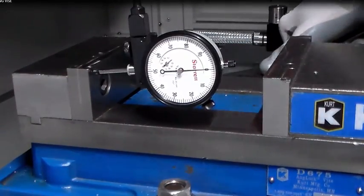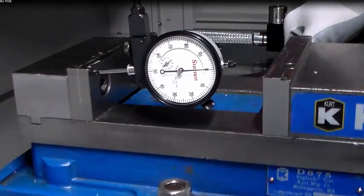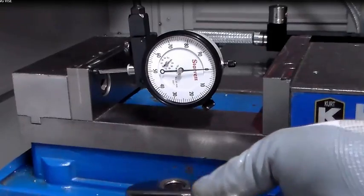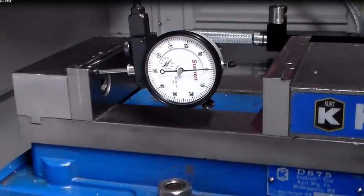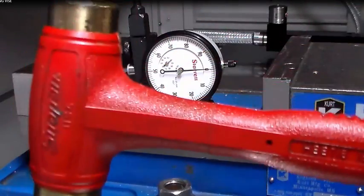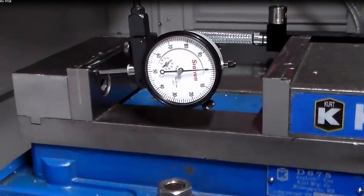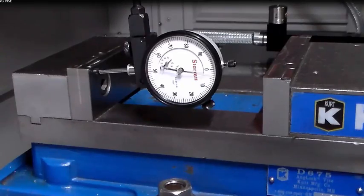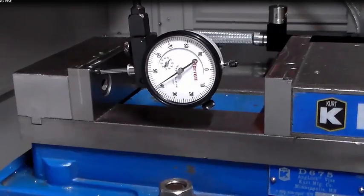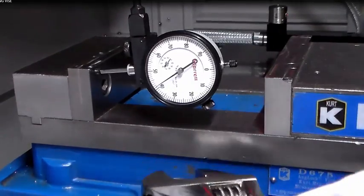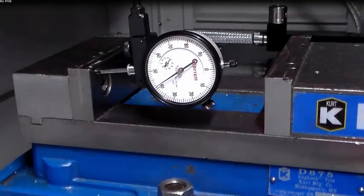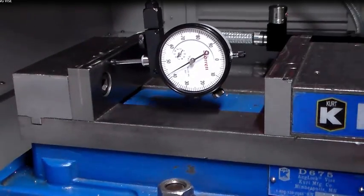We're going to tighten the far side because that will be our pivot point. We're going to loosen this side of the vise, take a brass hammer, and tap the vise around to get it somewhere close to what we read on the other side, maybe just a little bit beyond. Let's tighten it up just a little bit and see how close we are.